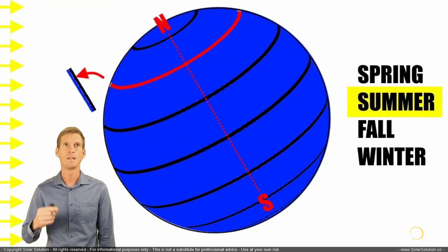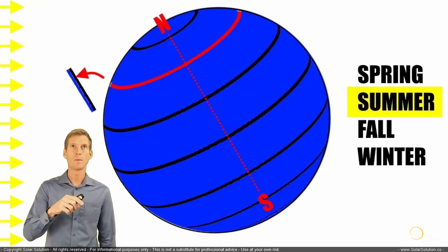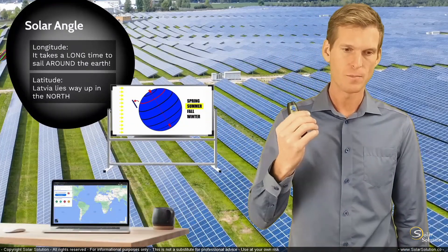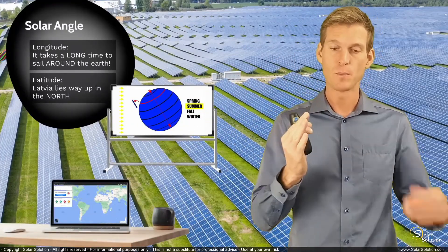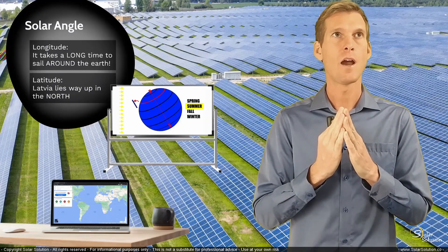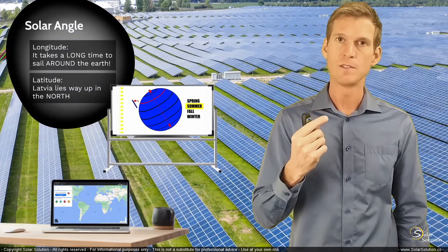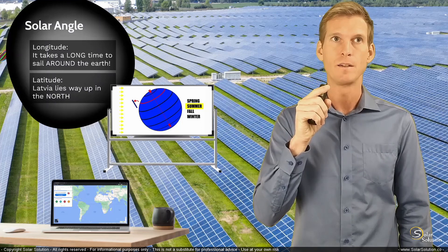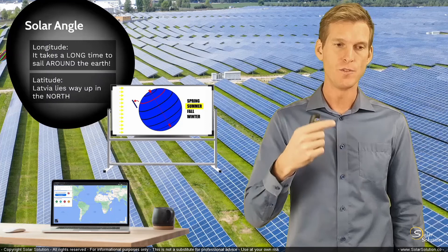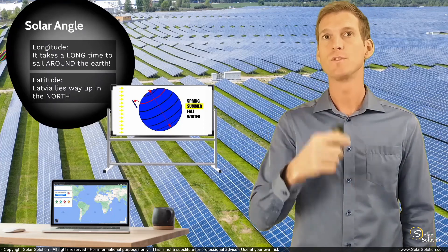Now that you have a basic understanding of longitude, latitude, what happens during the seasons, what happens to your relative angle towards the sun, and how you could orient your panel in an optimum perpendicular position towards the sun — let's see how you can actually find the relevant data, how you can figure out the longitude and latitude for your particular location, so that you can use both values to decide what the optimum angle will be for your situation.